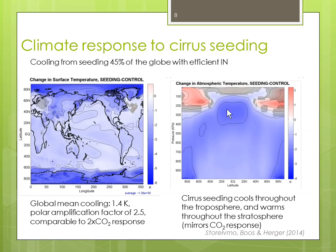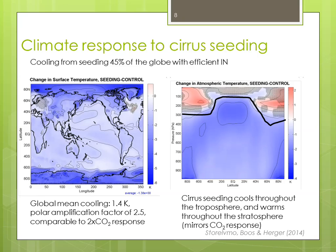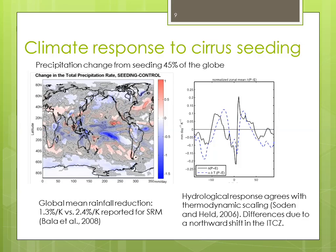In terms of vertical temperature changes, there's a cooling throughout the troposphere and then a warming in the stratosphere. Again, that mirrors what happens in response to increased CO2 concentrations — opposite sign, but otherwise very similar vertical temperature response to increased CO2. That just indicates the difference between the troposphere and the stratosphere.